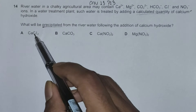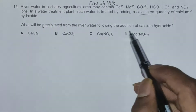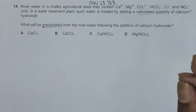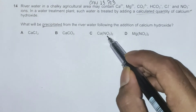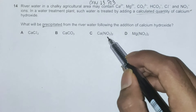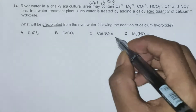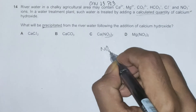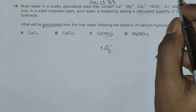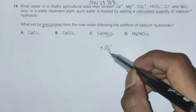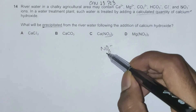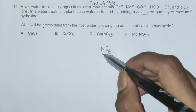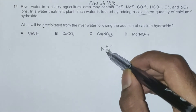We can check for the two nitrates in the options first. We need to know whether nitrates are soluble in water or not. The nitrate ion is NO₃⁻, made up of three oxygen atoms surrounding a central nitrogen atom.